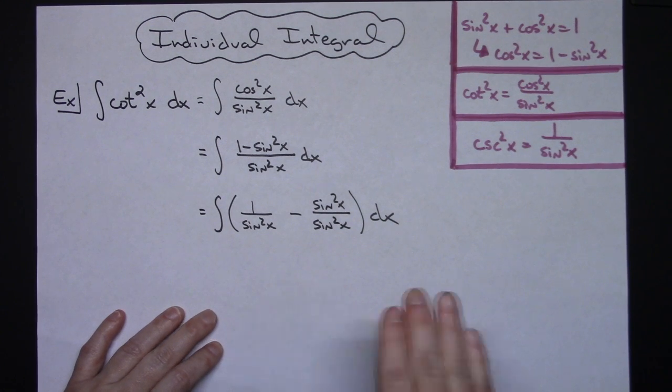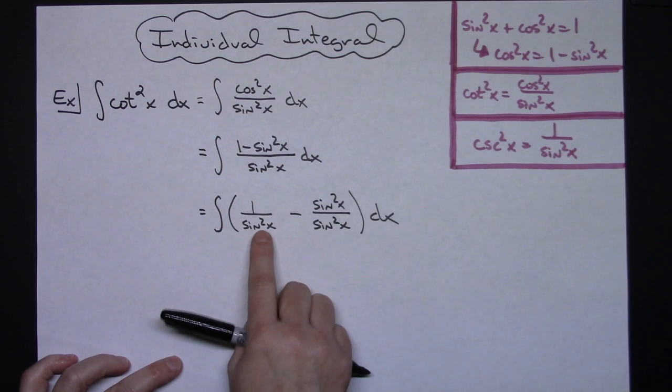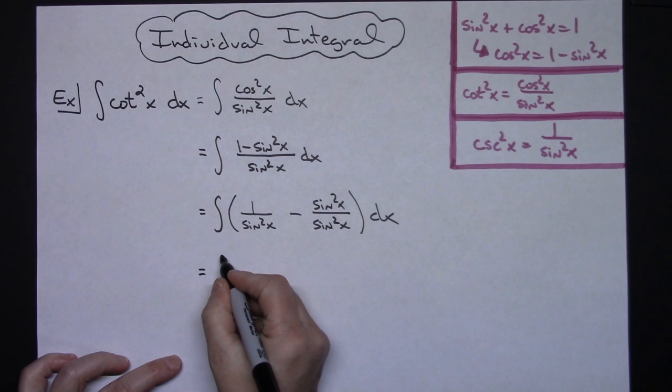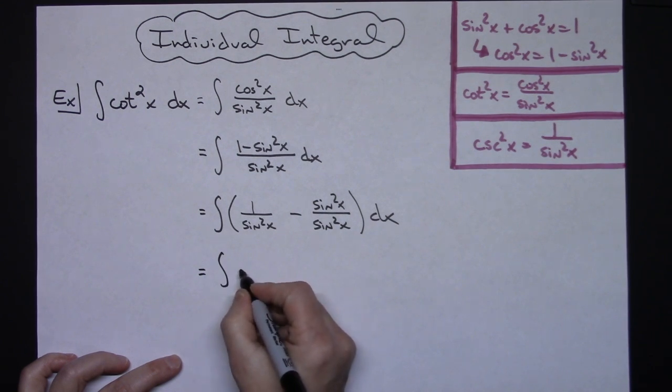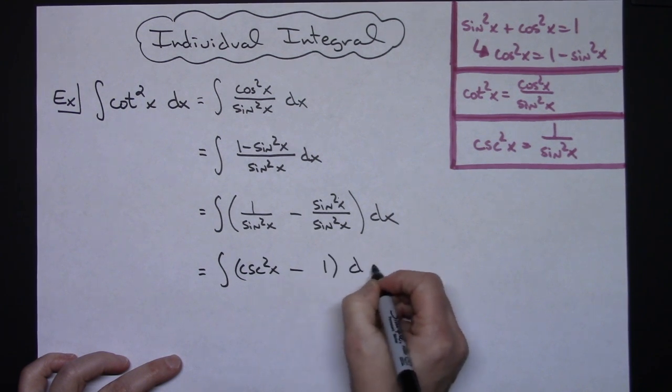When we get to there it becomes a straight easy integration here because this is going to turn into our cosecant and this is going to turn into one. So we'll have the integral of cosecant squared x minus a 1 dx.